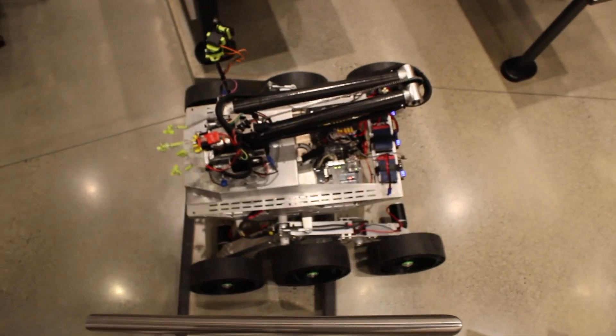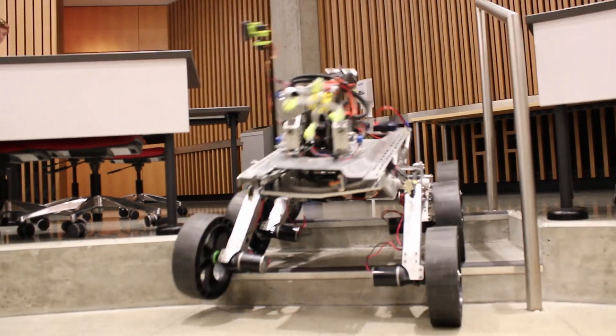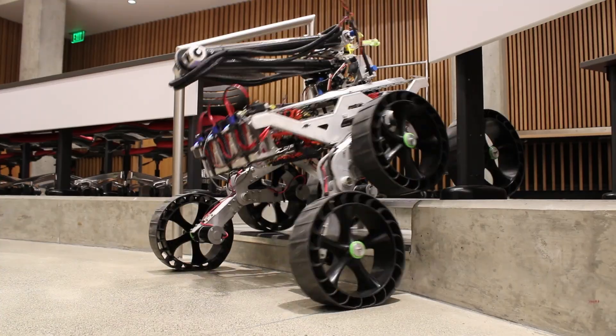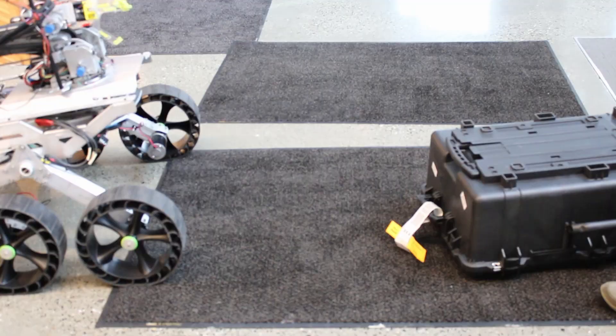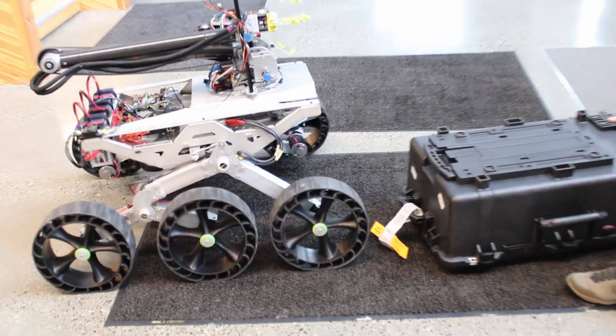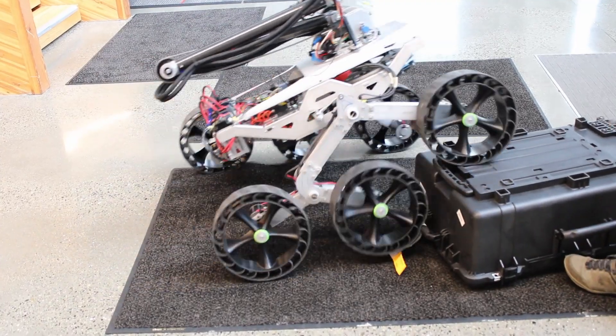The principal one of these is our rocker bogie suspension. During initial testing we determined that a rover of this size should be able to scale a 400 millimeter rectangular beam vertically straight from the front. In order to do this we gave our suspension plus or minus 20 degrees of tilt.